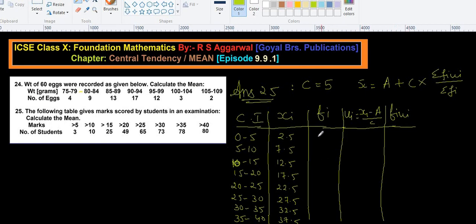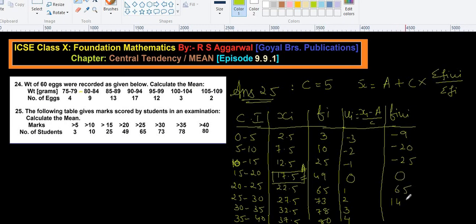So frequency is given as what. Frequency is given as 3, 10, 25, 49, 65, 73, 78, and 80. Then Ui, we select, assume mean as 17.5, so this is our A. So for that one, the Ui will be what, 0, minus 1, minus 2, minus 3. This will be 1, 2, 3, and 4. Here fi Ui, so this one minus 9, minus 20, minus 25, here 0, here 65, here 146, here 234, and here 320.